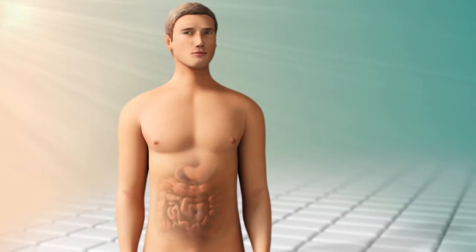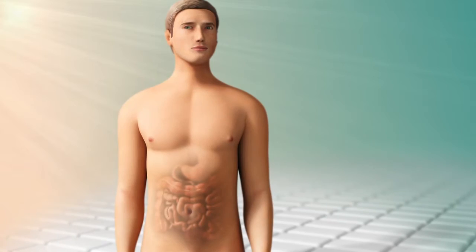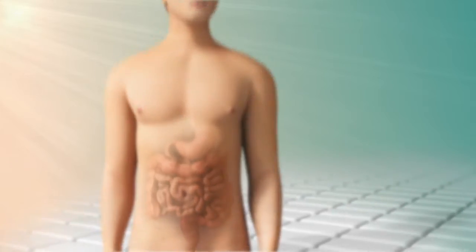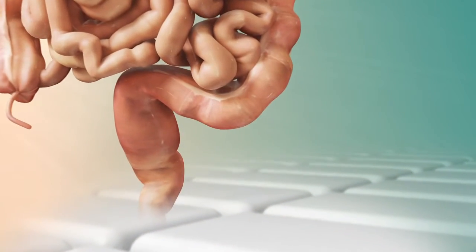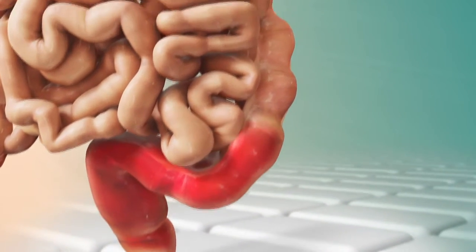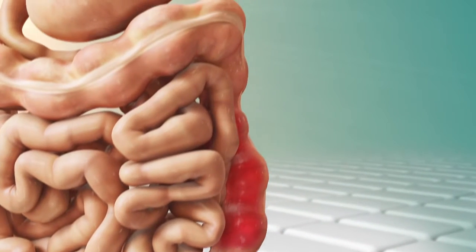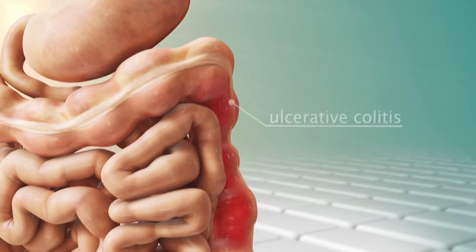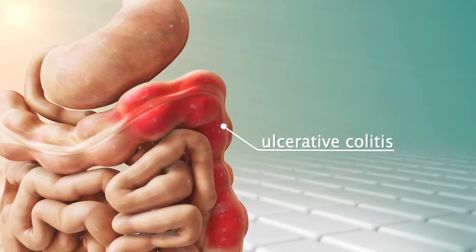In ulcerative colitis, the associated mucosal inflammation usually begins in the rectum and then spreads along the colon, most commonly affecting the left side, but in some cases extending all the way to the cecum.